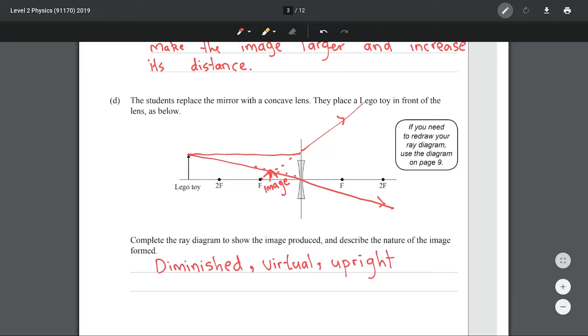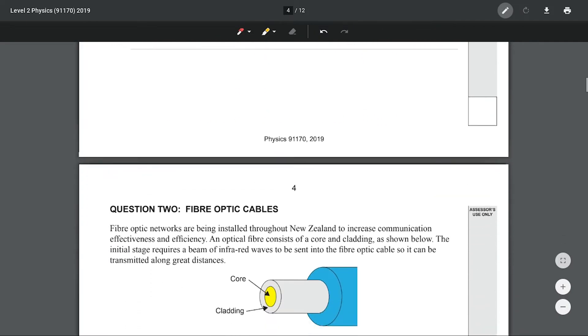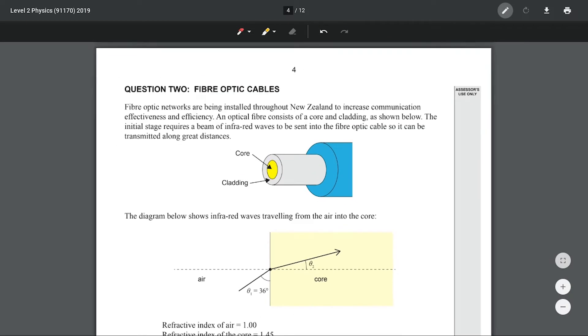The reason the image is virtual is because the rays don't actually converge in real space. In order for us to imagine they converge, we have to draw these virtual rays going back. When the rays aren't actually converging, when we're having to imagine these virtual rays, we have a virtual image.